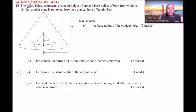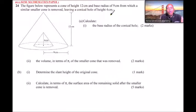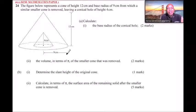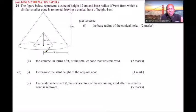Question number 24: the figure below represents a cone of height 12 centimeters and a base radius of 9 centimeters, from which a smaller similar cone is removed, leaving a conical hole of height 4 centimeters. Part a, roman numeral one: calculate the base radius of the conical hole. Roman numeral two: calculate the volume in terms of pi of the smaller cone that was removed — two marks.